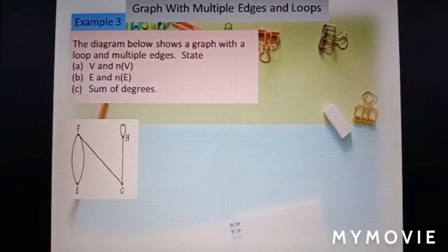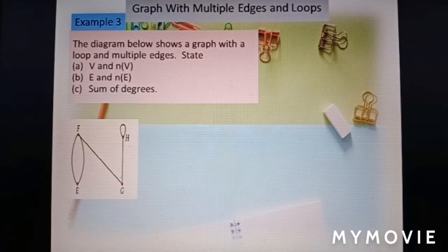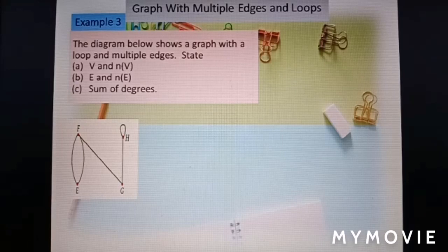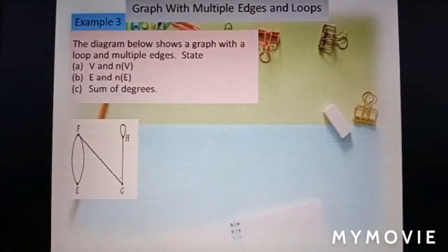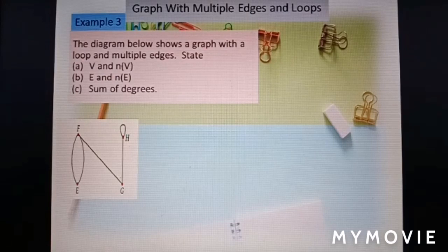Graph with multiple edges and loops. Before we answer this question, we must know what is multiple edges. Multiple edges involve two vertices. The vertices are connected by more than one edge. So this is multiple edges. The sum of degrees is twice the number of edges.